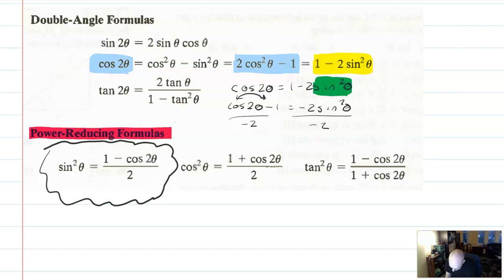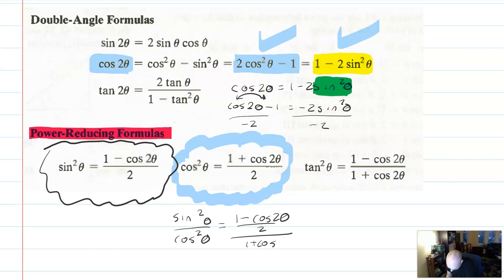And similarly, you could do the same with the identity that's solved for cosine squared. And you could get this. So this is basically taking the cosine of two theta identity, solving using one of these two forms, and then solving it for cosine squared or sine squared. And then finally, we could take these two and put them on top of each other and do sine squared theta over cosine squared theta equals one minus cosine two theta over two over one plus cosine two theta over two. Reduce that. What do you get? Your identity for tangent squared theta.